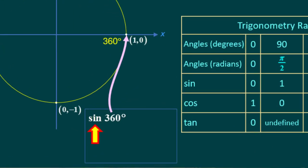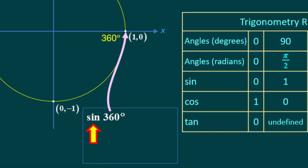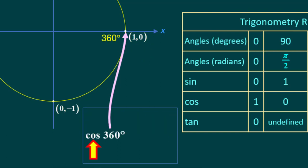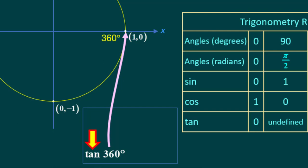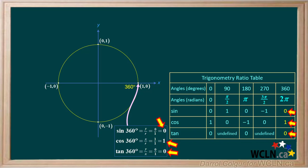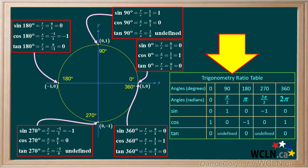Now we'll go to 360 degrees and start by finding the sine. The coordinates for 360 degrees are the same as the coordinates for 0 degrees: 1 for x and 0 for y. The sine of 360 degrees is y over r, which is 0 over 1, or 0. Next we'll find the cosine of 360 degrees. The cosine is x over r, which is 1 over 1, or 1. Lastly we'll find the tangent of 360 degrees. The tangent is y over x, which is 0 over 1, or 0. We'll record the sine, cosine, and tangent for 360 degrees in our table.